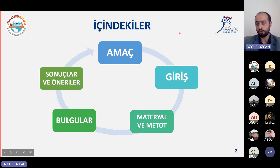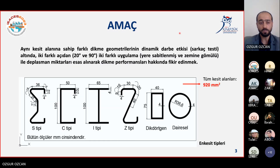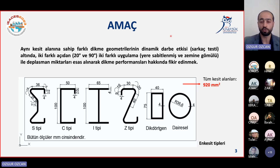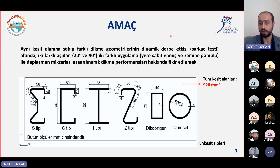Çalışmamızın konusu çelik otokorkuluklarda dikme performanslarının sarkaç testi kullanılarak sonlu elemanlar metodu ile araştırılması. Sunumumuz beş bölümden oluşuyor: amaç, giriş, materyal ve metot, bulgular, sonuçlar ve öneriler. Otokorkuluklar yol kenarlarında özellikle çarpışma esnasında araçları yolda tutan veya yola döndüren pasif koruma tertibatlarıdır. Malzemesine göre sınıflandırmada beton bariyerler, çelik otokorkuluklar, çelik kablo sistemleri ve ahşap dikmeli otokorkuluklar sayılabilir.